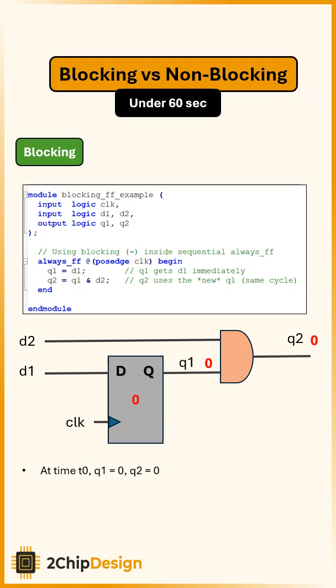Q1 is assigned to D1 and Q2 is assigned to Q1 and D2. At time 0, Q1 is 0 and Q2 is 0. On the next rising clock edge, the inputs are D1 equals 1 and D2 equals 1. After the clock, Q1 becomes 1 and Q2 also becomes 1.